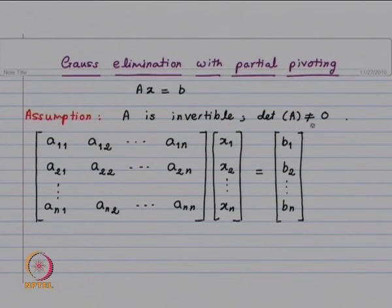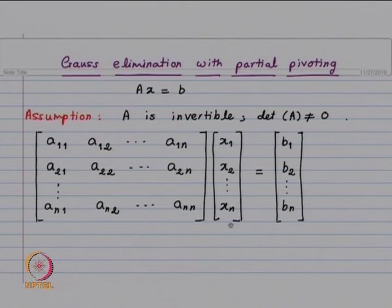In the Gauss elimination method with partial pivoting, it may be necessary to interchange rows. This interchange of rows is accounted for by the permutation matrix P. Our setting is: A is an invertible matrix, so we have the system Ax = b, where the determinant of A is not equal to 0 and we have n equations in n unknowns. The right-hand side b_1, b_2, ..., b_n is given, and x_1, x_2, ..., x_n is the unknown vector. Since determinant of A is not equal to 0, this equation has a unique solution.